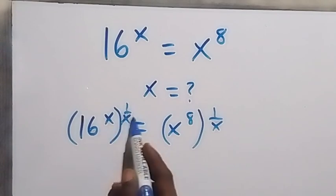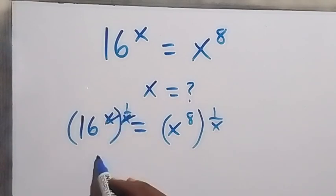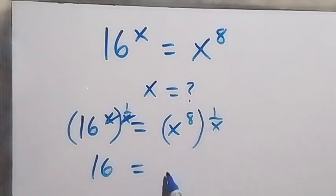x will cancel x here and we are left with 16 which is equal to... This power multiply, this will give us x raised to the power 8 over x.